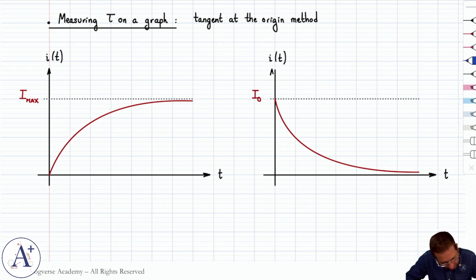Well, what you do is you draw the tangent at the origin to the graph. And when it intersects here is when you reach T equals tau. So when it intersects the horizontal asymptote Imax, T is equal to tau.